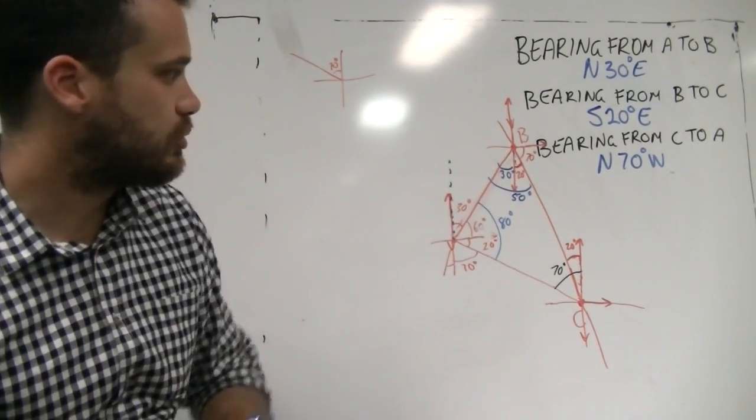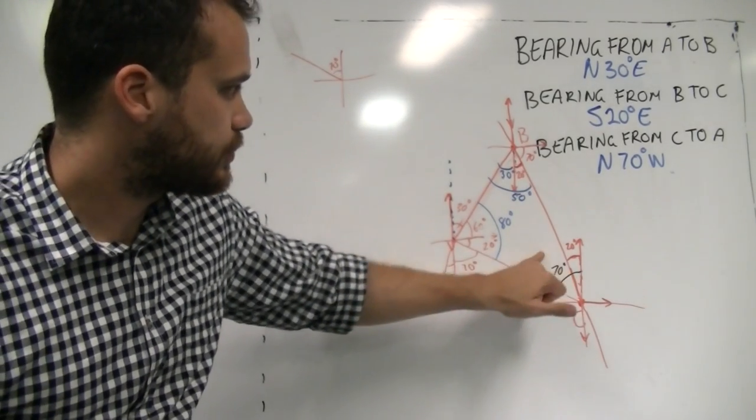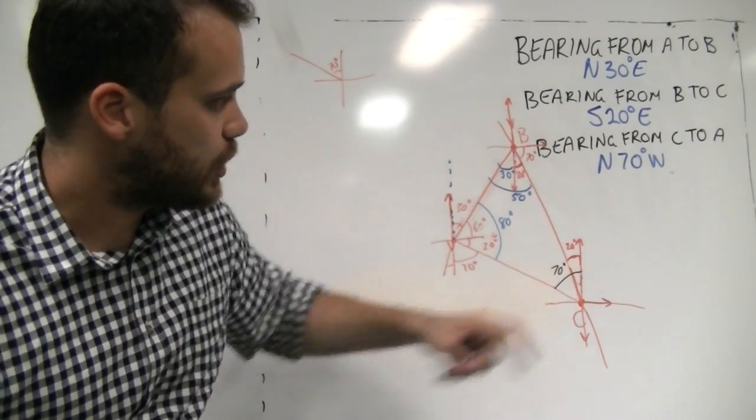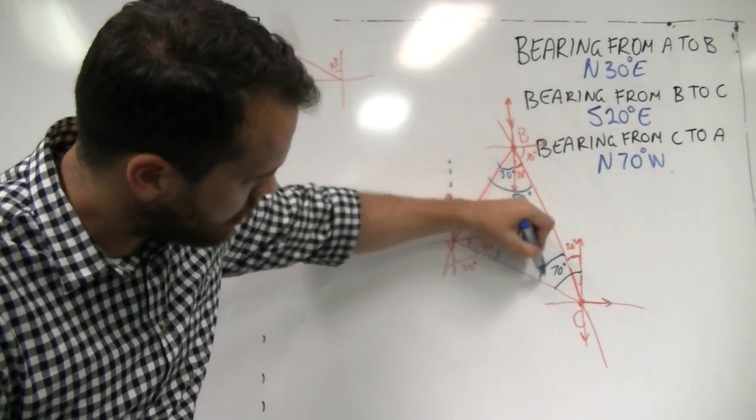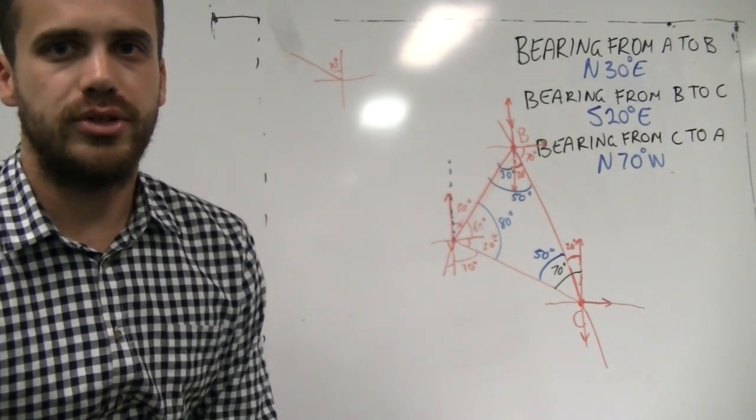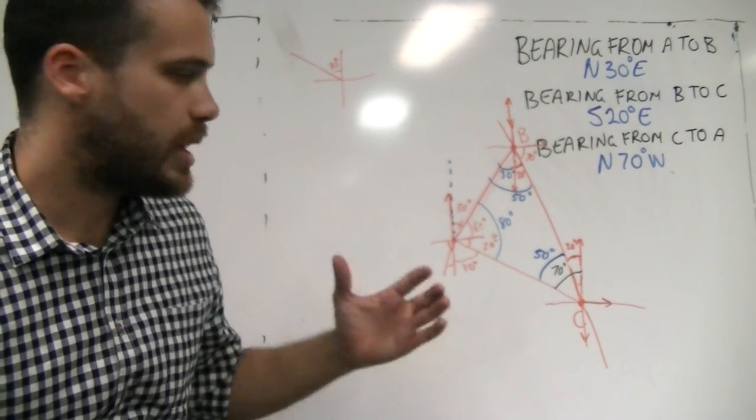Which means that this entire angle for our triangle is 50 degrees. We can use similar reasoning to find this one. Or, we can see that that's 70, we can see that that's 20. So that means that this must be 50 degrees. A lot going on there in terms of angles. Make sure...